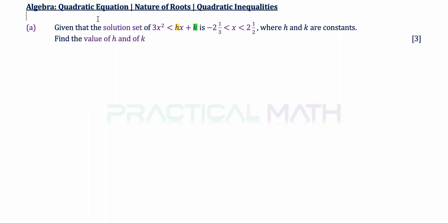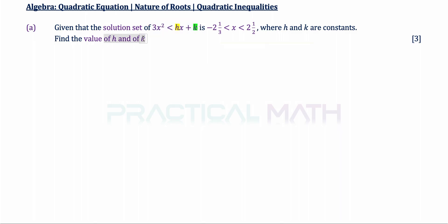For Part A, we are given a solution set of x in that range, and this range answers the quadratic inequality. We need to find the value of h and k. The way I look at this question is that we need to form a separate quadratic inequality using this range of answers, and do a direct comparison against the given quadratic inequality in order to find h and k. This means we need to work backwards.